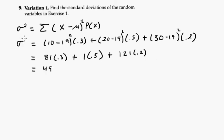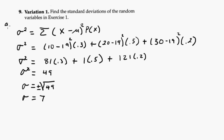So 49. So the variance is 49. So then the standard deviation is the square root of 49. And we're going to use the positive. So it's 7. So that was A. So we would do it again. We'll use this formula for B.